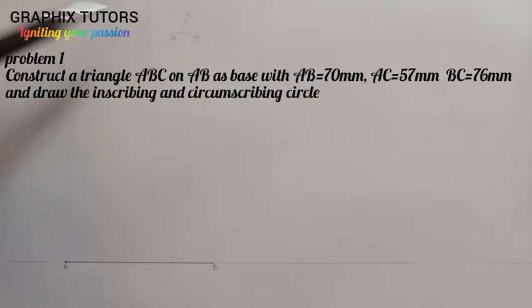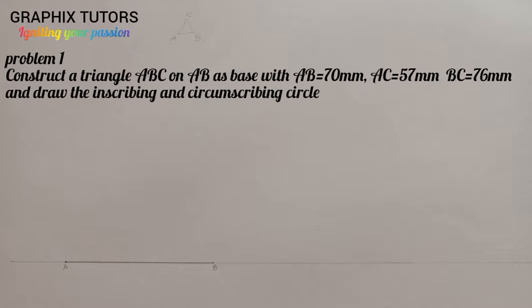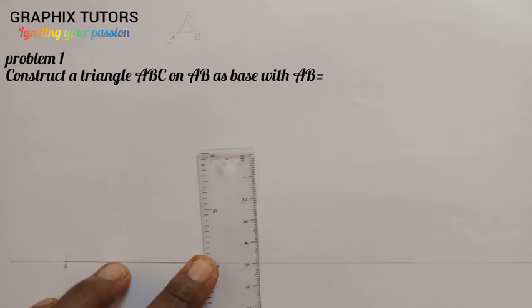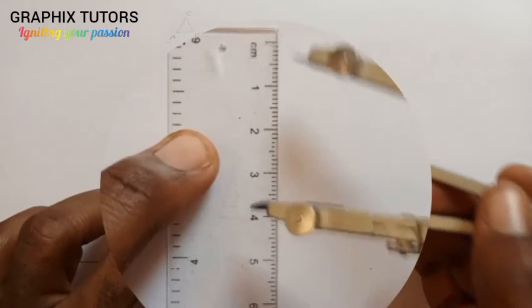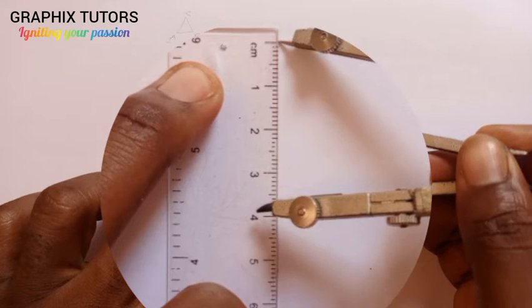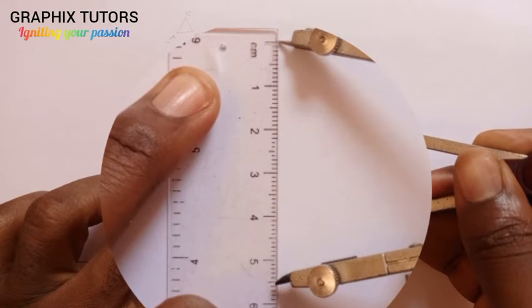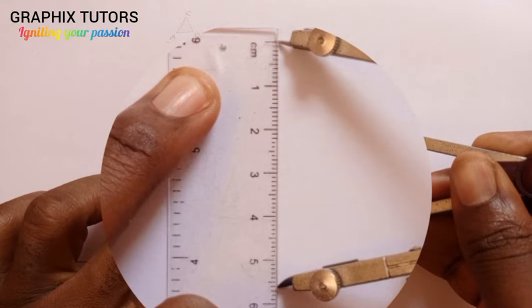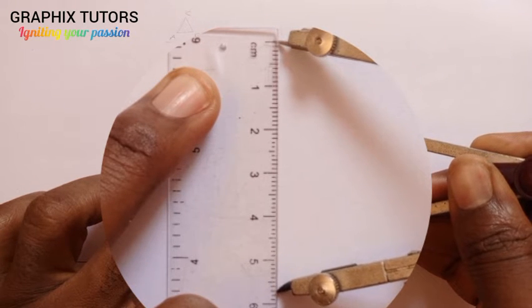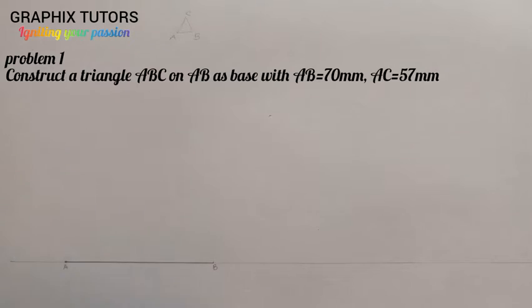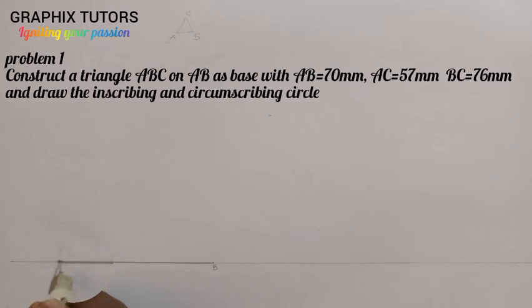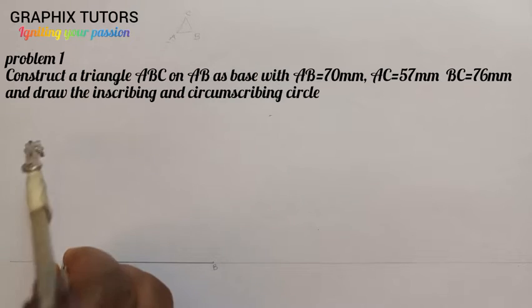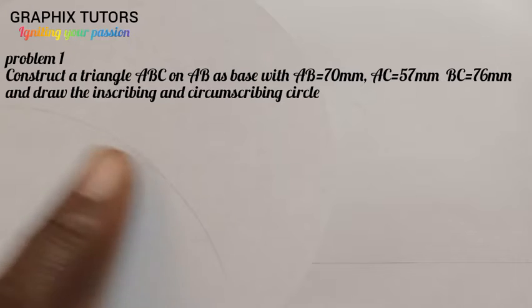We know that C is somewhere around here, and we are given that AC is 57mm. I'm going to take my metal rule and measure 57mm. Since it says AC, I'll start from A. So placing it on A, C falls somewhere along that arc line.